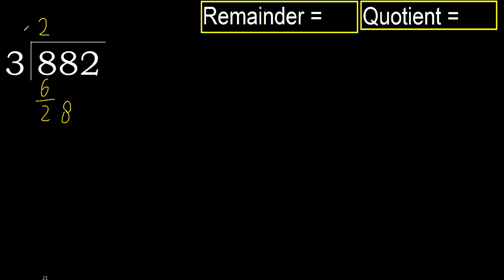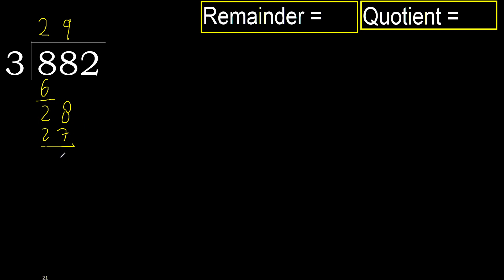3 multiplied by 9 is 27, which is not greater, ok. Subtract, next: 12.